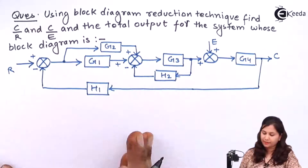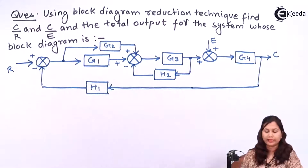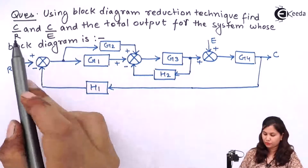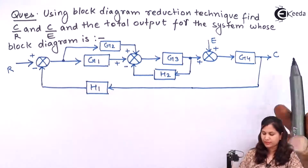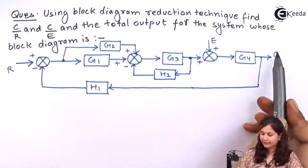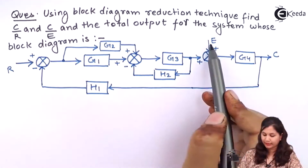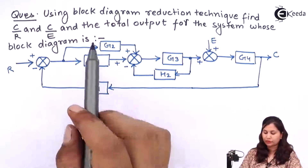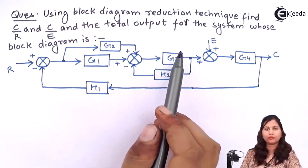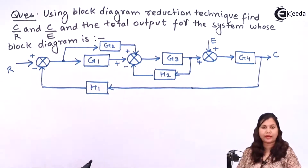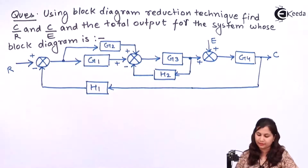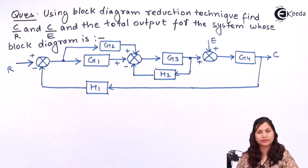This is our problem. Here we have to find out two ratios: C by R and C by E, and the total output for the system. So we have to find these three things in the question. Let's solve this problem.